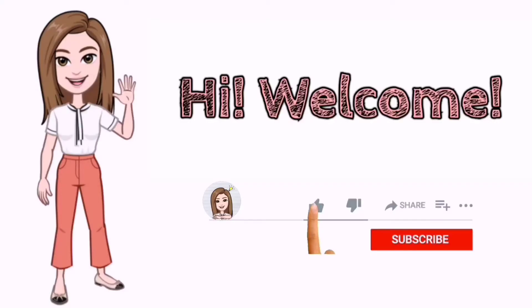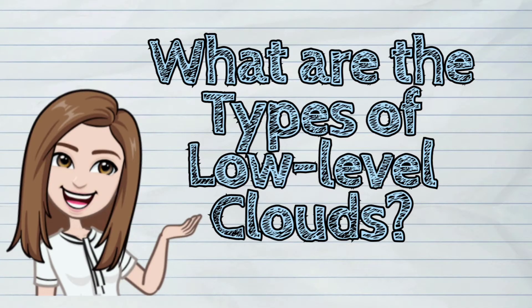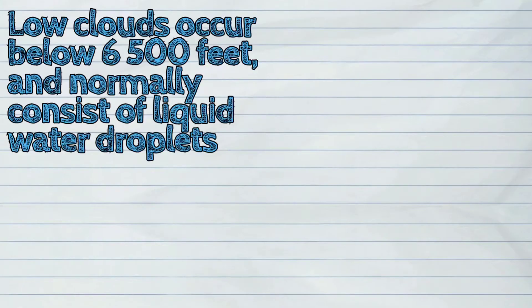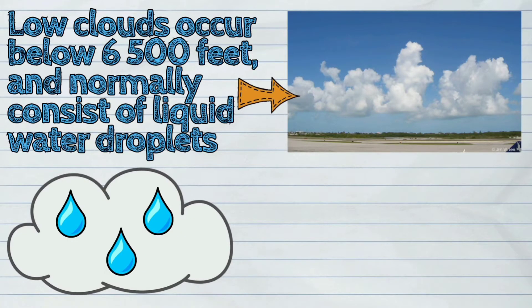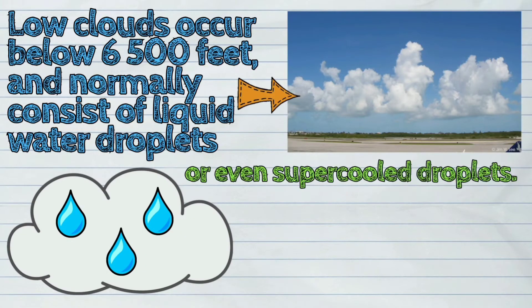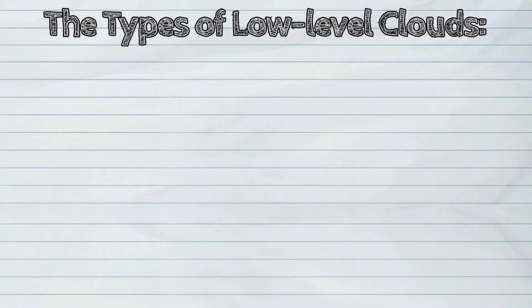Hi! Welcome to iQuestionPH. Today's question is: What are the types of low-level clouds? Low clouds occur below 6,500 feet and normally consist of liquid water droplets or even supercooled droplets. The following are the types of low-level clouds.